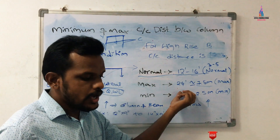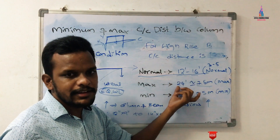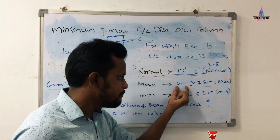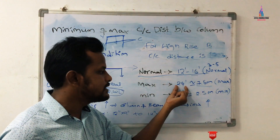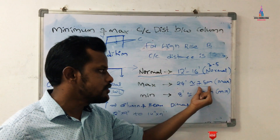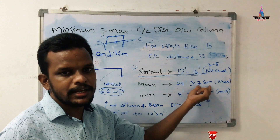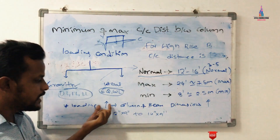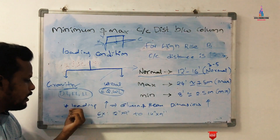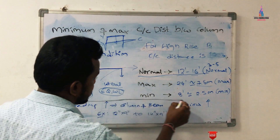As per standard values, most practitioners take these values based on their design considerations. For example, at a maximum span of 24 feet (approximately 7.5 meters), we need higher dimensions to resist that span. If the loading condition increases, both the column and beam dimensions will increase. This is an important point to remember before finalizing maximum or minimum column-to-column distances.